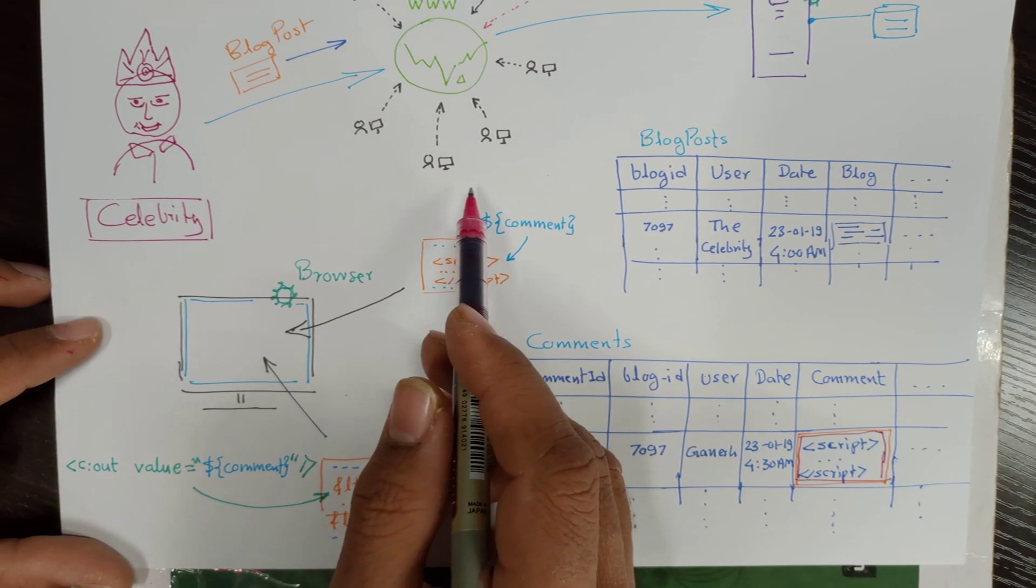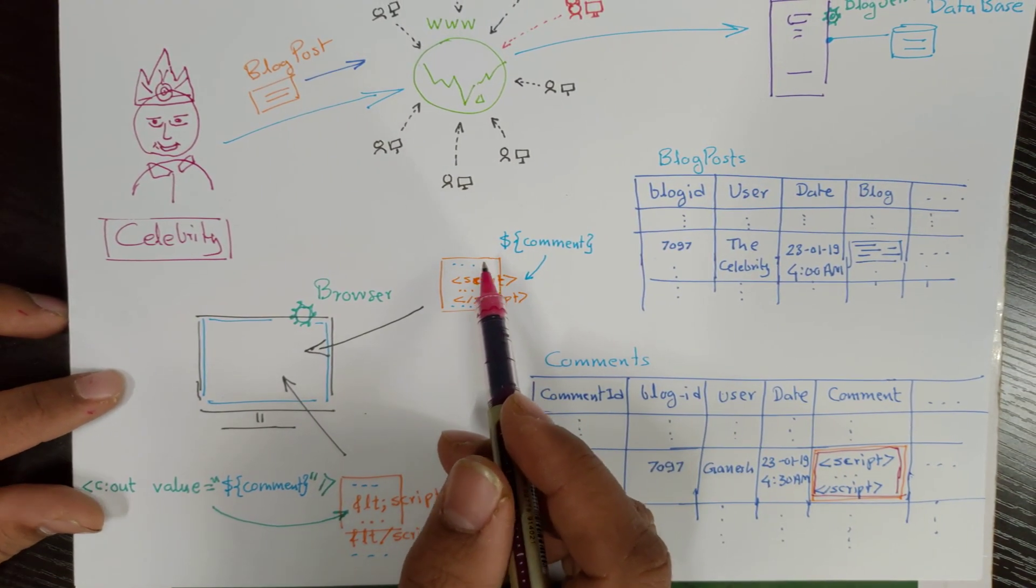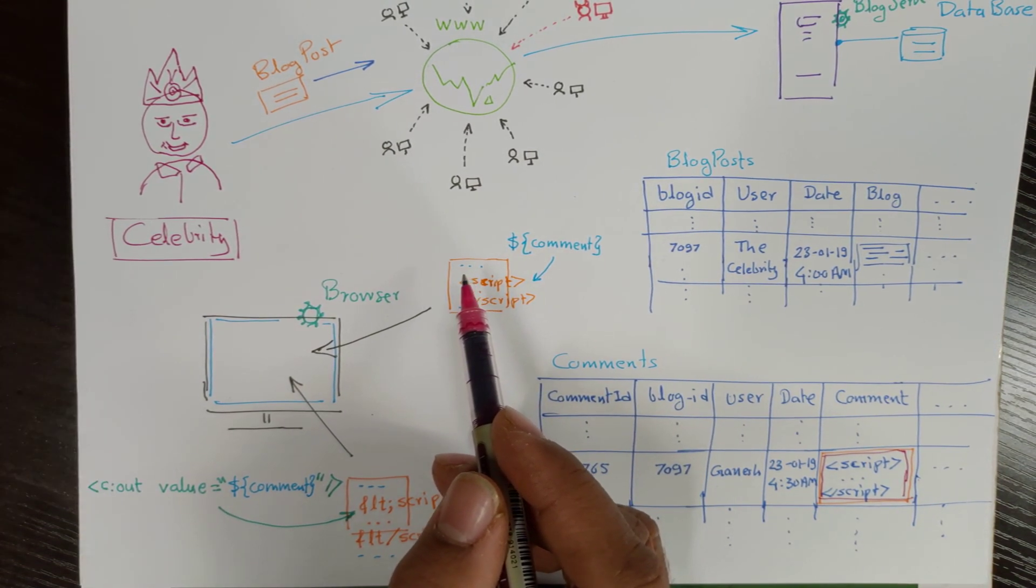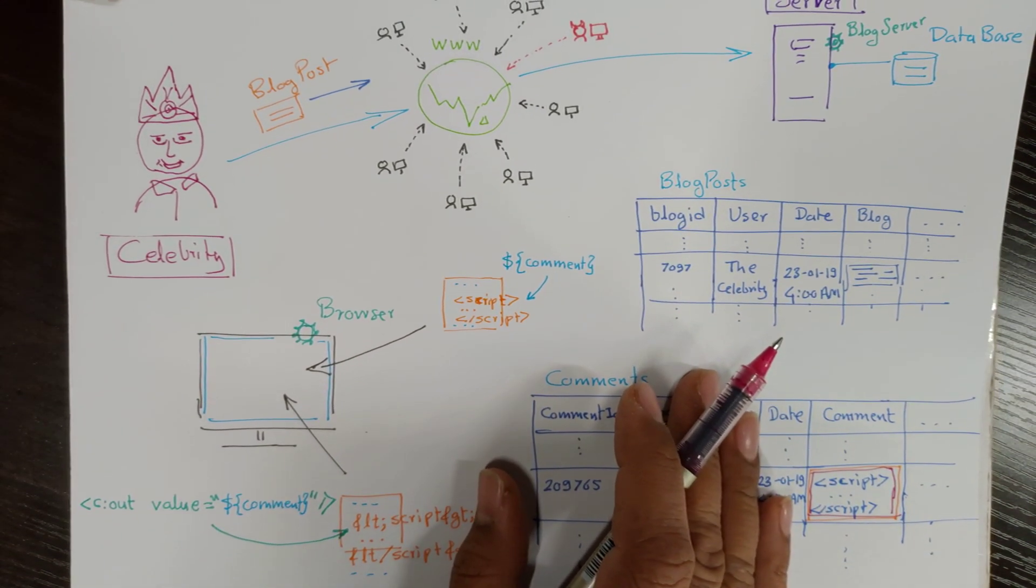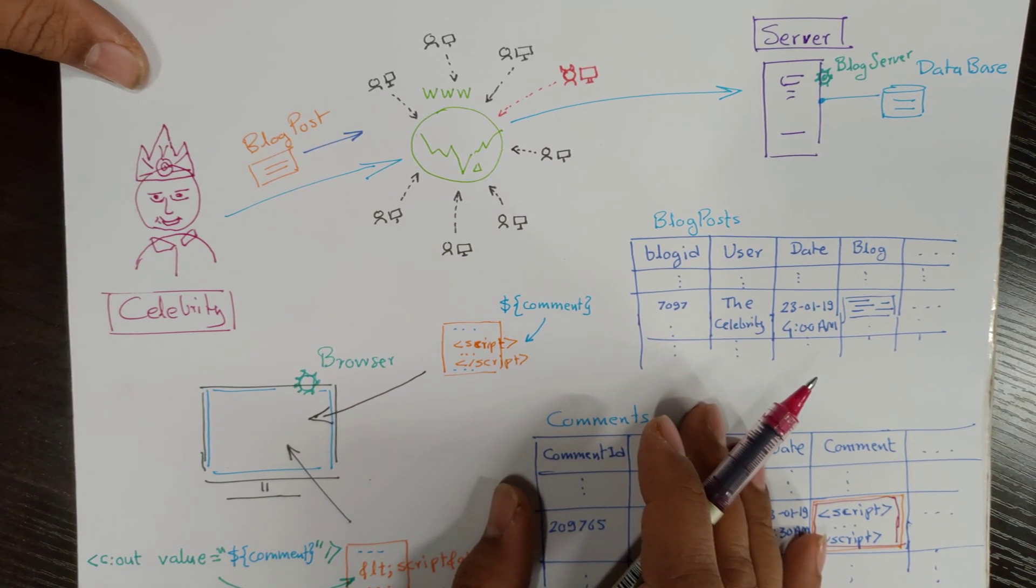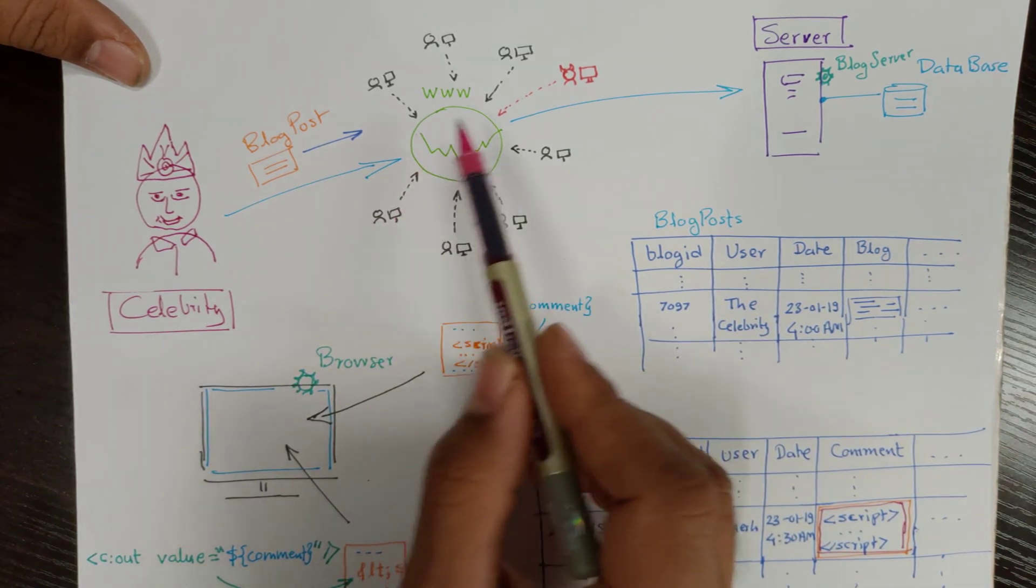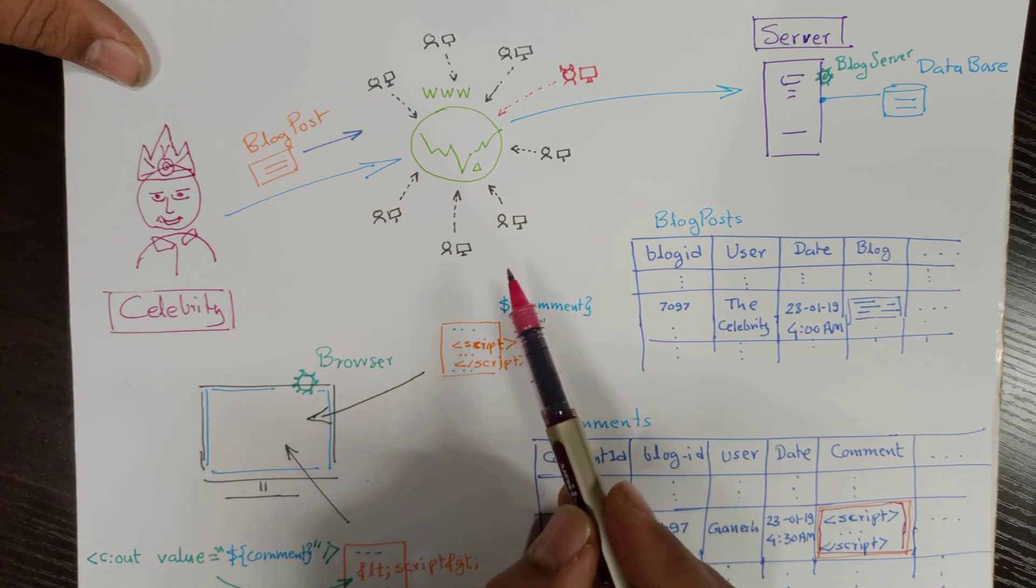their next click, they started accessing the blog posted by his favorite celebrity. The server not only shown the blog posted by the celebrity, but the server also shown the comments on the post. Each fan and follower receiving the blog along with the comments posted by the viewers, and one of the comments was a malicious script.